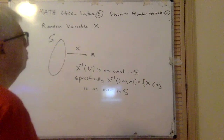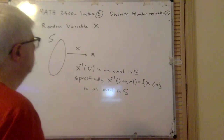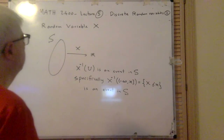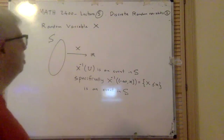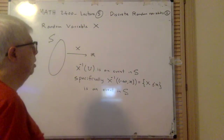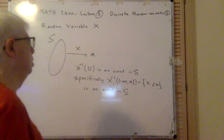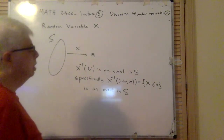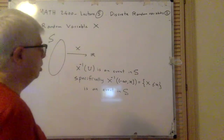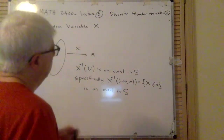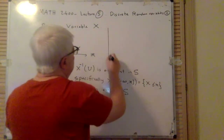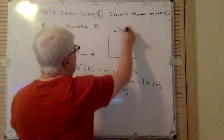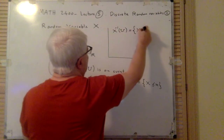MAP2400, lecture 5, discrete random variables. Last time I defined random variable — it's a function X from sample spaces to R such that X inverse of certain types of sets in R, subsets of R, is an event in S. I explained last time that X inverse of U is denoted by X belonging to U.